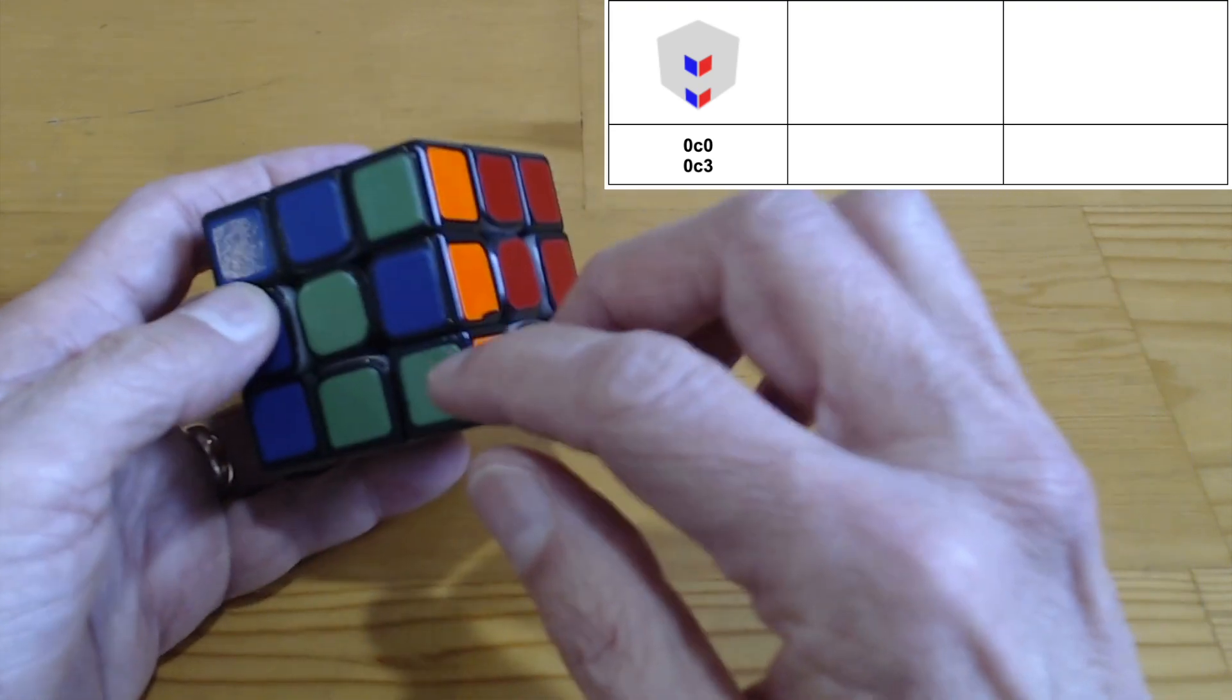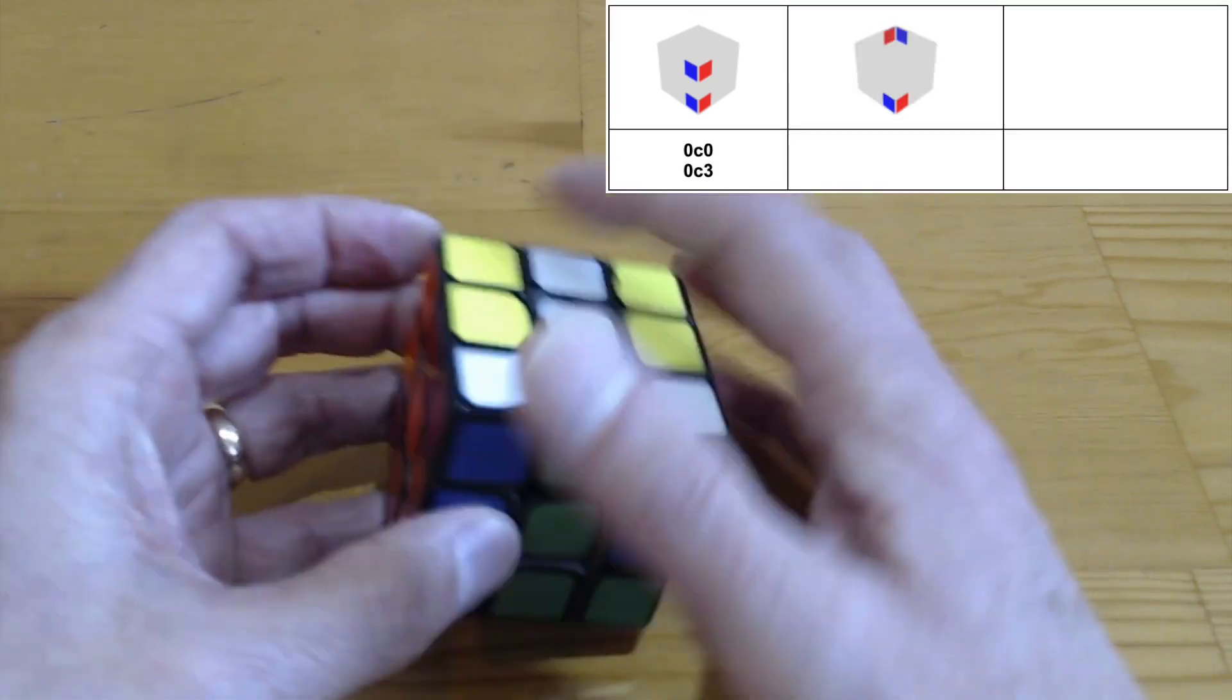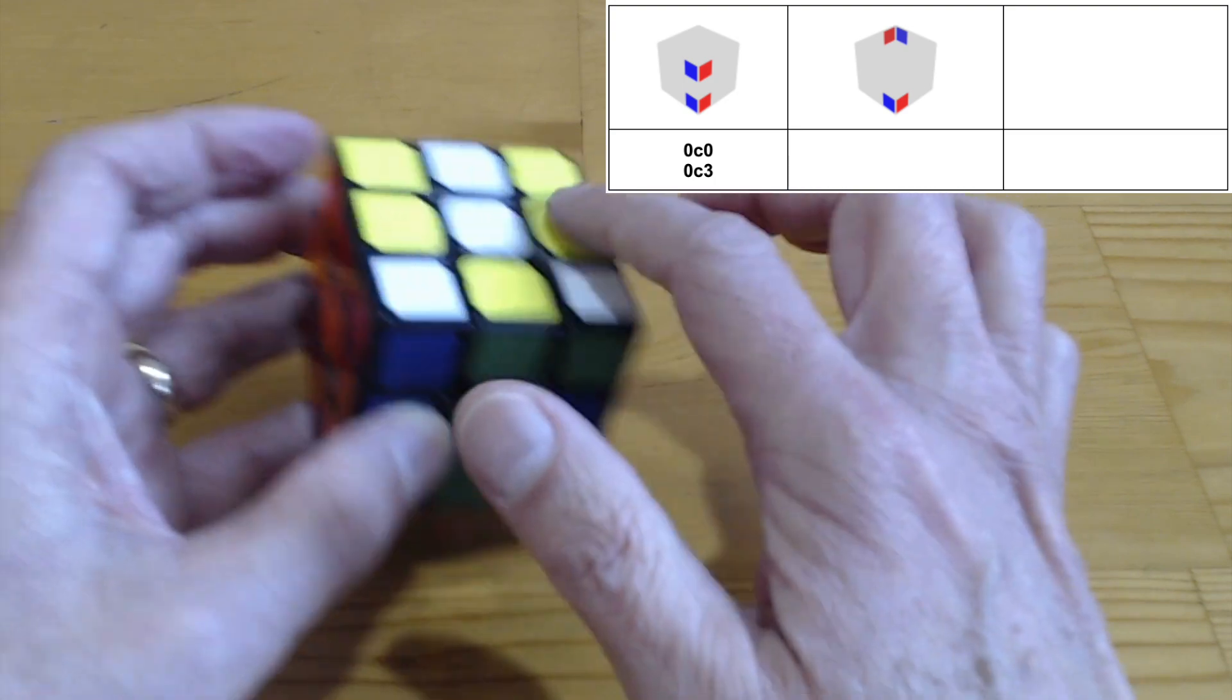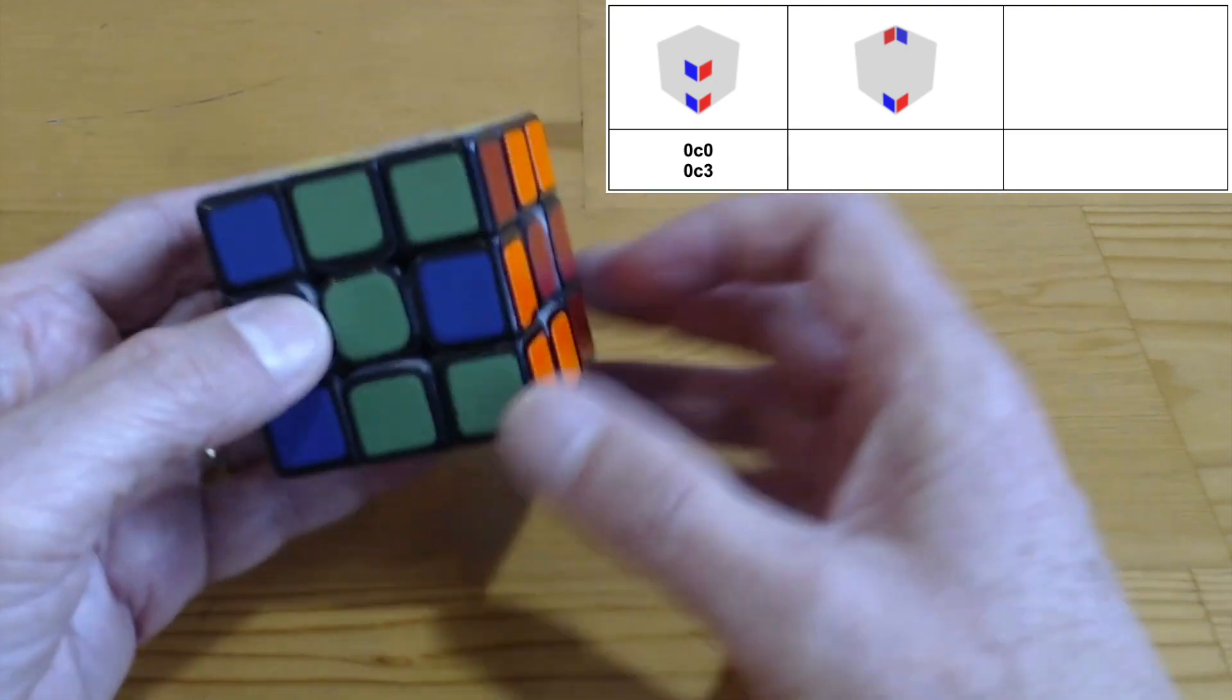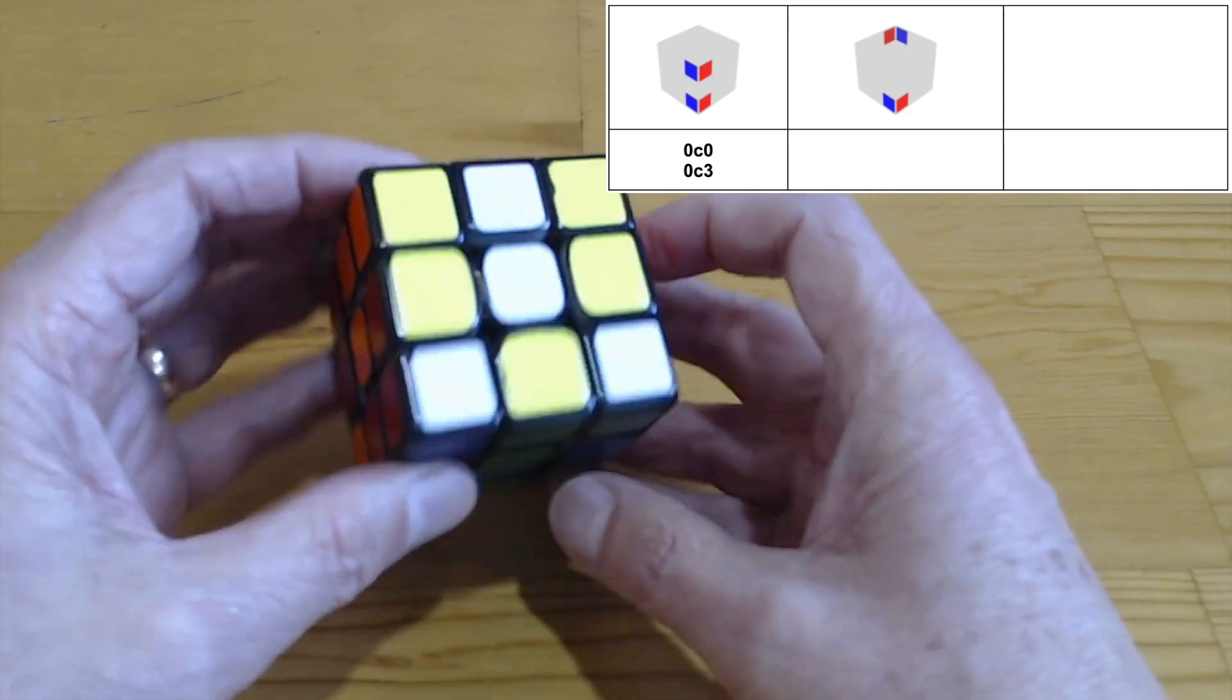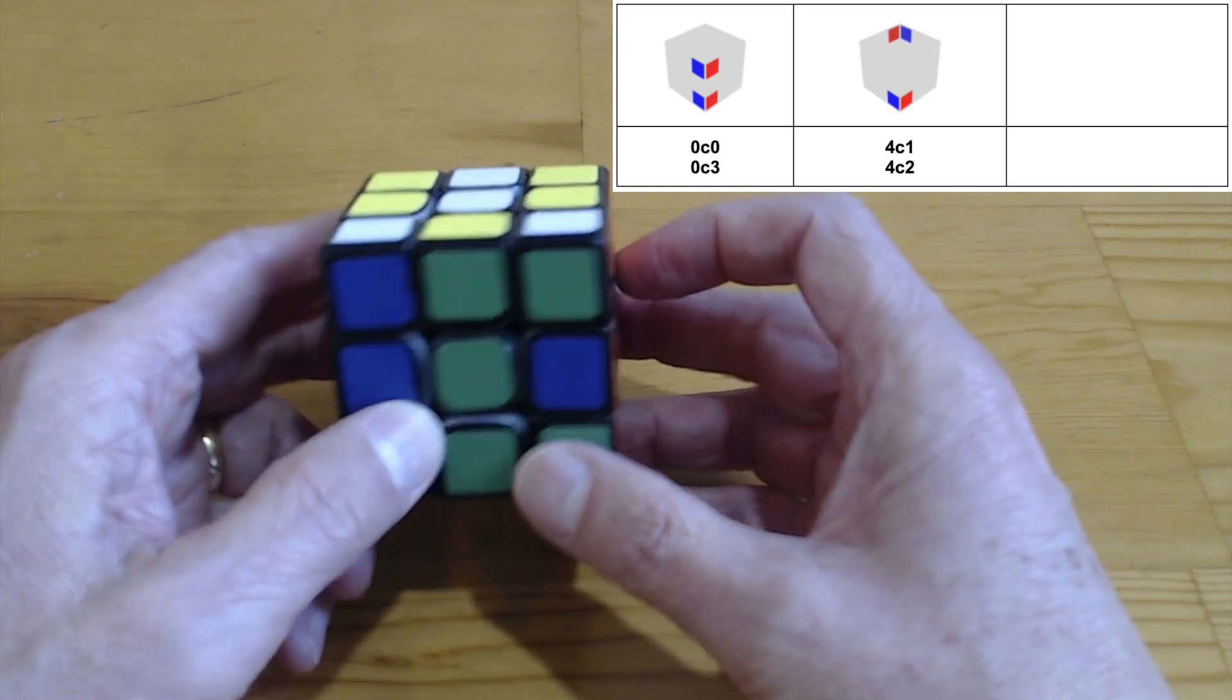Next case is when the corner is opposite from its partner. So that would be like this. This is four bad corners. These are all good with respect to each other, but they're not good with respect to the bottom half. So that's four bad corners. And that can be either one or two moves. So 4C1, 4C2.